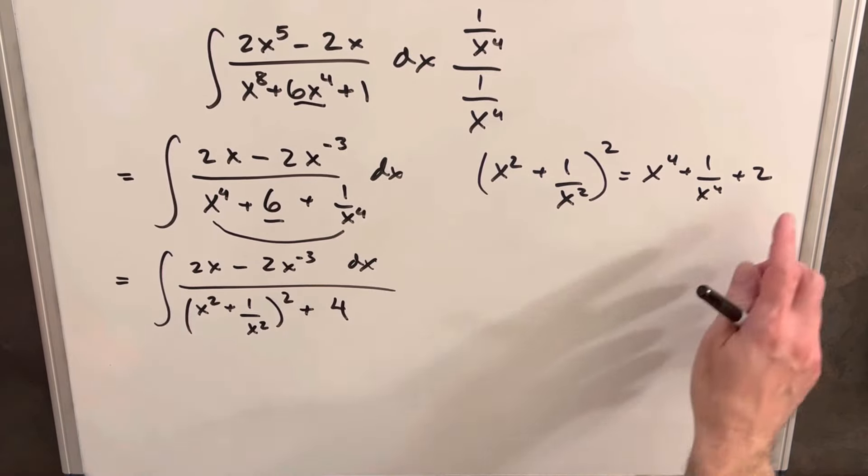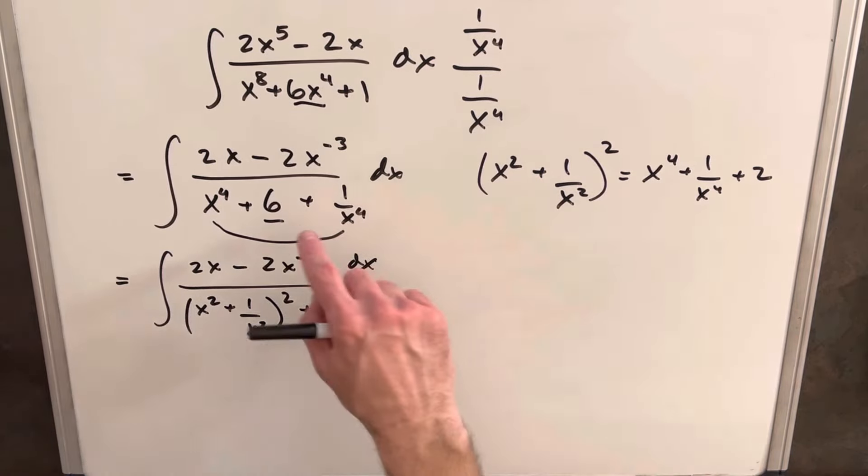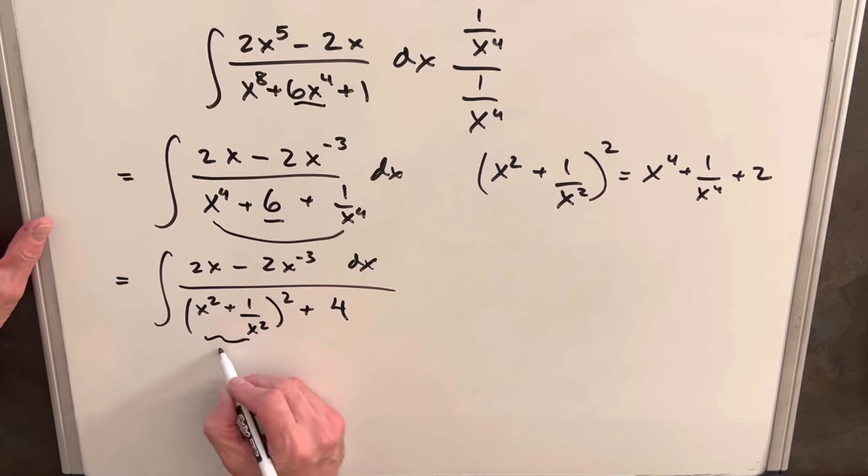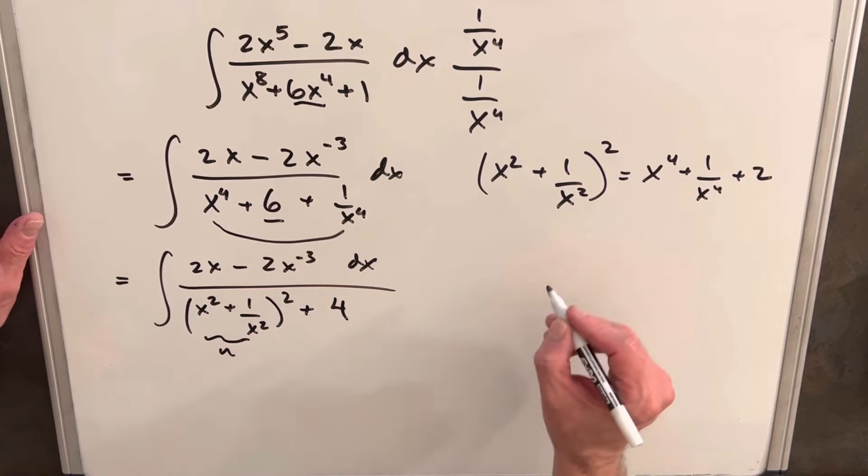Okay, so now I've done this where you notice, we have our 4 plus 2 here, gets us back to the 6. So we haven't changed the denominator. And then from here, what I want to try is a u substitution. We just want to make this our u and see what's going to happen.